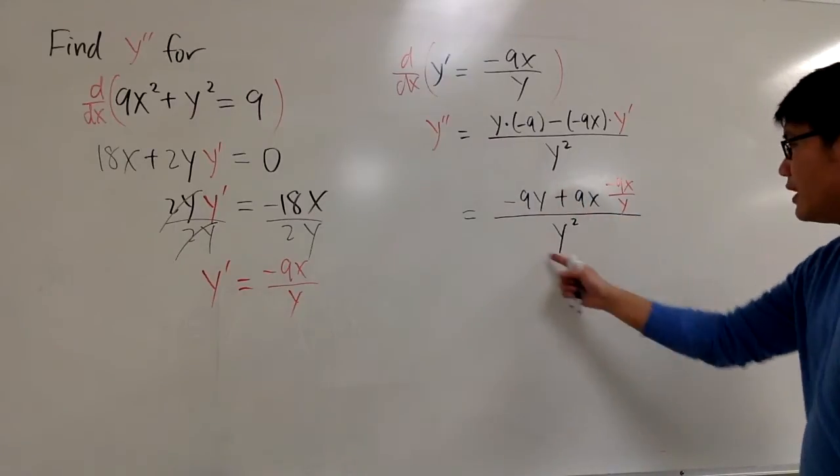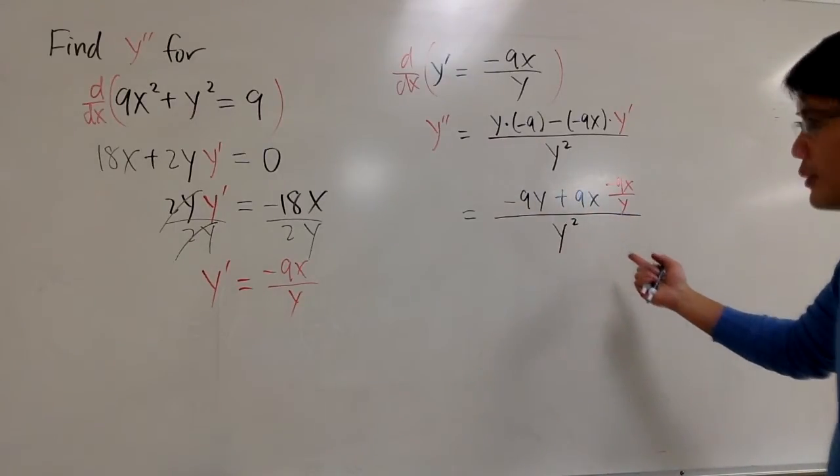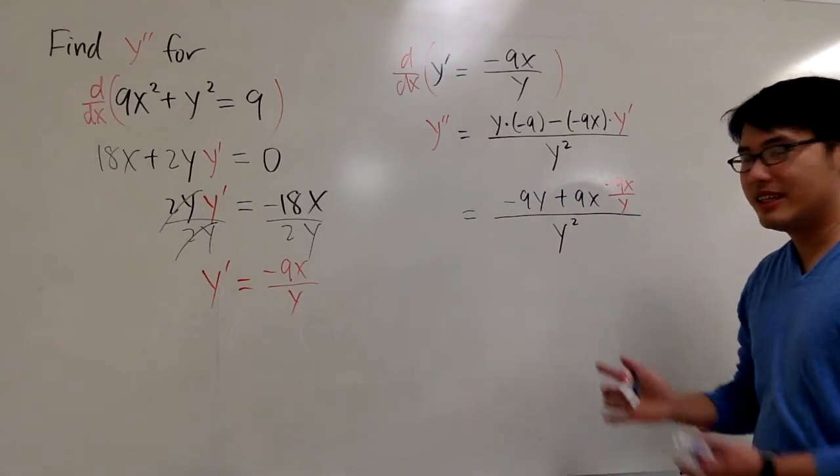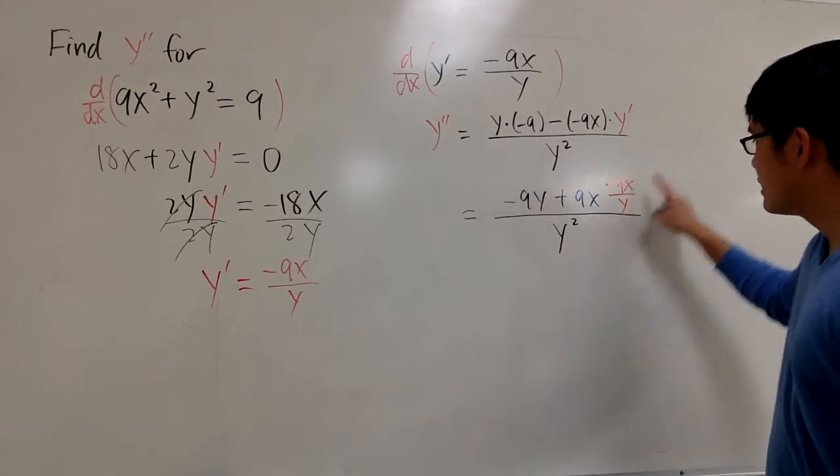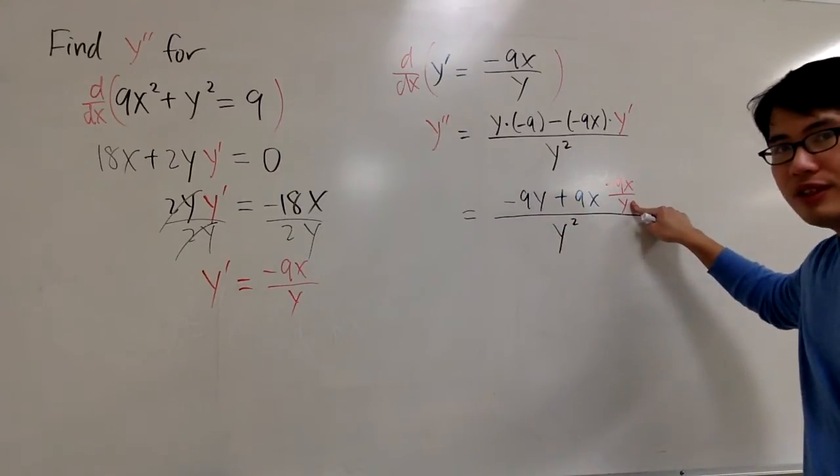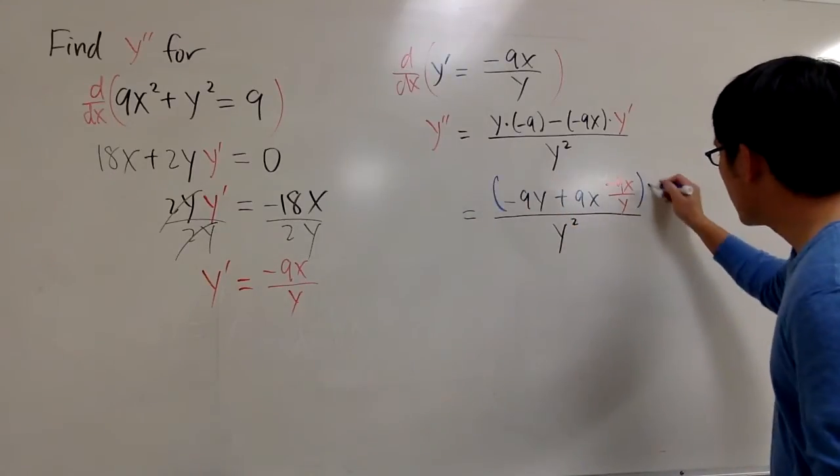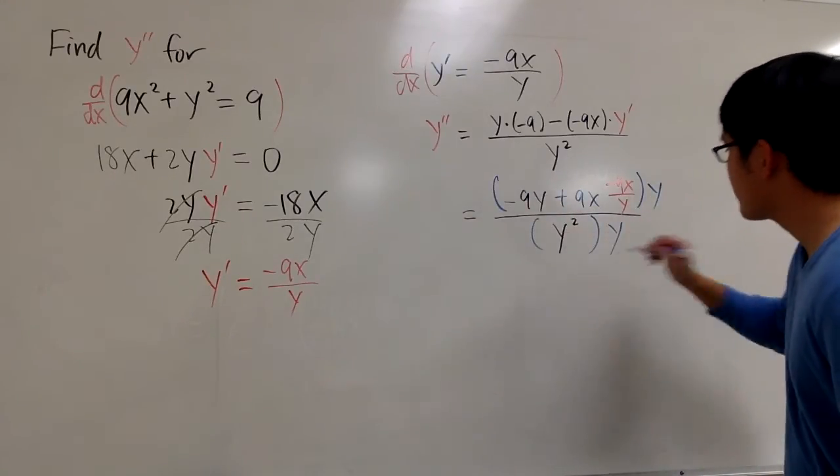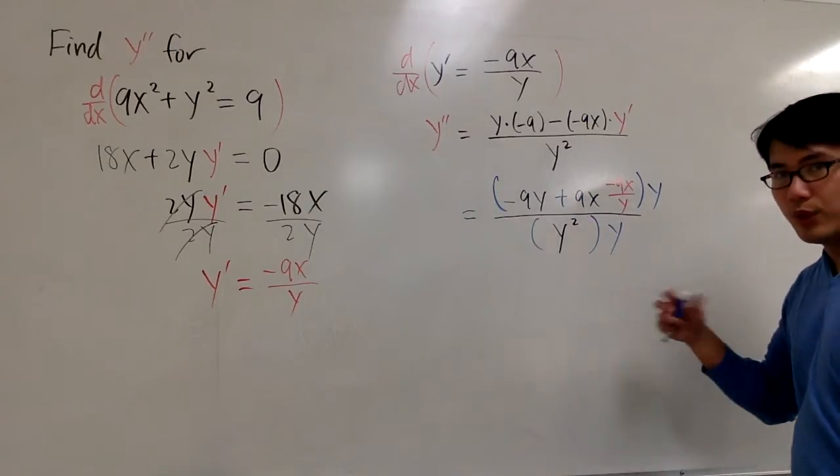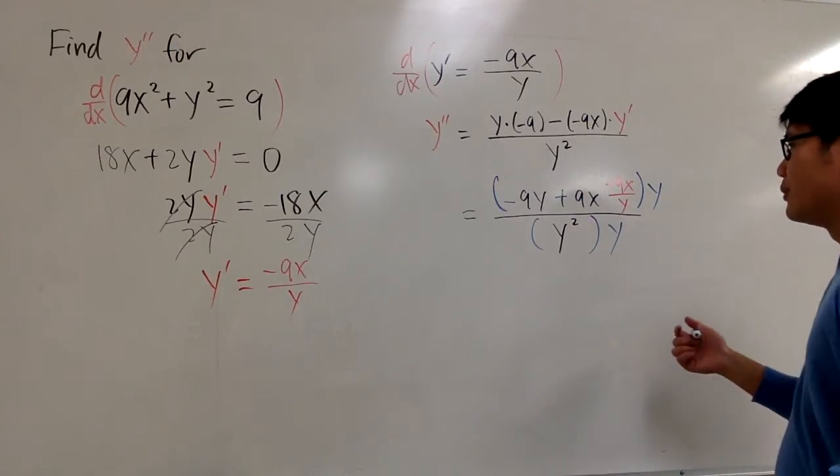And as you can see, after we do that, we are going to get a complex fraction. So we are going to look at the denominator of the small fraction. And we only have y. We are going to multiply the top and bottom by y. So this way we don't need to deal with the complex fraction anymore.